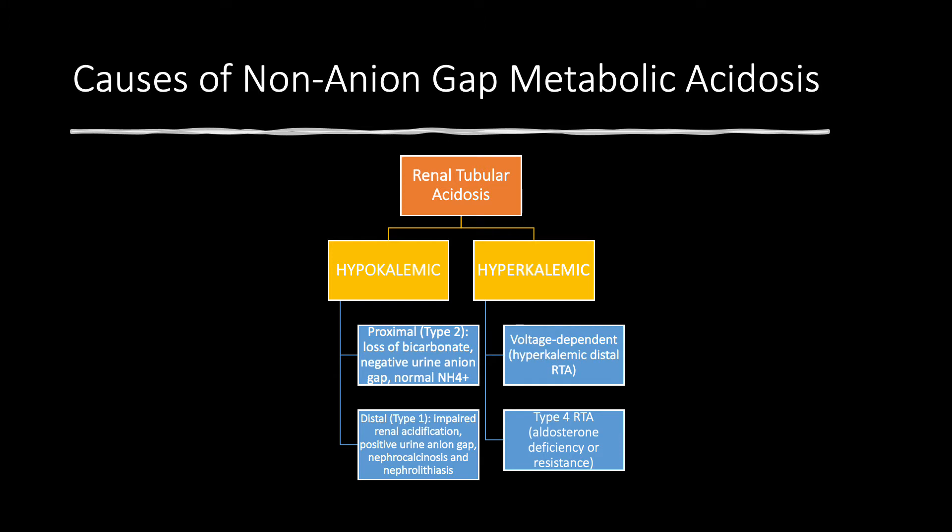This is not the case with distal type 1 renal tubular acidosis. Here, by definition, we have impaired renal acidification — the distal acidification, the NH4 excretion has declined. So you have a positive urine anion gap. Additionally, you have nephrocalcinosis and nephrolithiasis, which are very characteristic of distal type 1 RTA. Now, if you have RTA but you have hyperkalemia, we call it hyperkalemic RTA. Here we have two types: either voltage-dependent — some people call it hyperkalemic distal RTA — and type 4 RTA, which is due to aldosterone deficiency or resistance. This is a very general overview and we're going to go into that in much more detail.